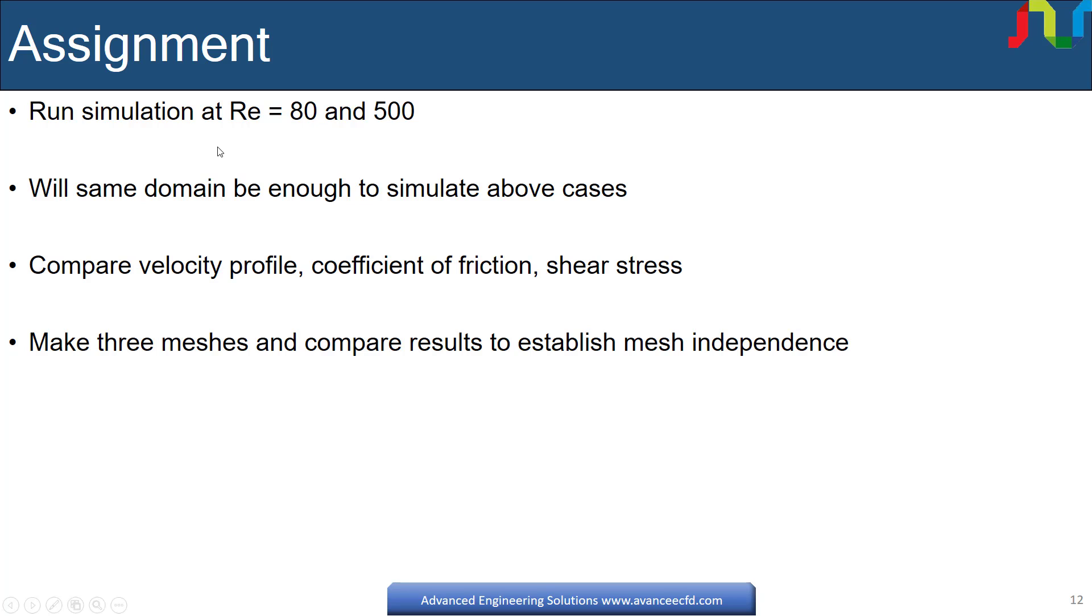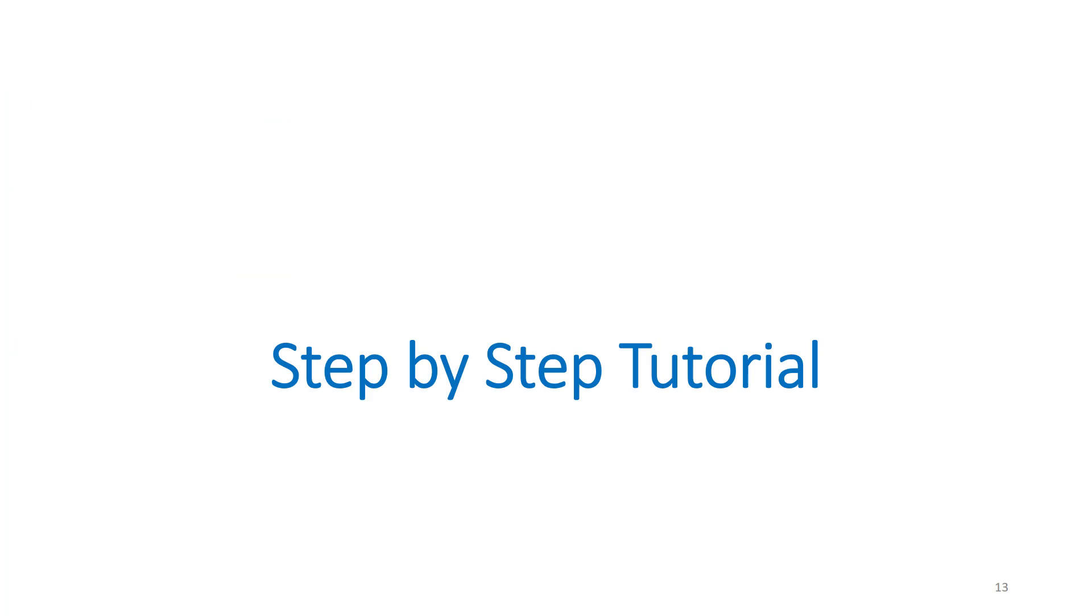To practice and master CFD, I would recommend you to do the simulation at Reynolds number 80 and 500. You have to decide the domain dimension. Keep the diameter same and check if the length of pipe will guarantee the fully developed flow. As we did before, compare velocity profile, coefficient of friction and shear stress from CFD to analytical results for the given Reynolds number. Also make three meshes for each case, you can keep same number of nodes in both cases and see whether you can get the mesh independence at which stage or size of number of nodes.